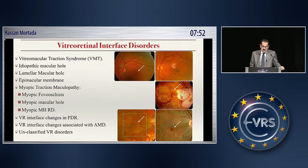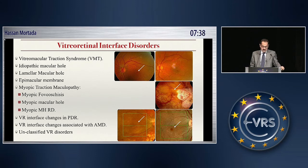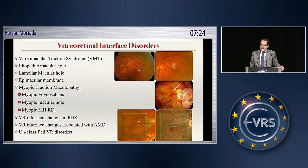This is an enumeration of the vitreoretinal interface disorders. We have the vitreomacular traction syndrome, idiopathic macular holes, lamellar macular hole, epimacular membrane. Myopic traction maculopathy is also a vitreoretinal interface disorder, and we also have vitreoretinal interface disorders in proliferative diabetic retinopathy and associated with AMD, and then there is a group that you cannot classify to any of the above.